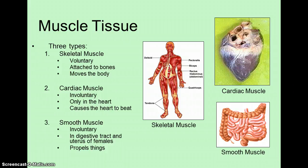Hi, this screencast covers the last two major tissue types in the human body: muscle tissue and nervous tissue.